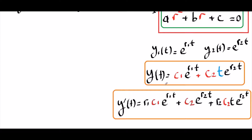If you differentiate this general solution y(t), you obtain y'(t) using the product rule. And when you plug in the initial conditions given, you can solve for c1 and c2.